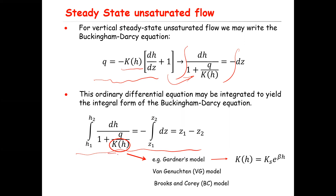In this equation, for K(h) you can use several parametric models like the van Genuchten model or Brooks and Corey's model to describe the unsaturated hydraulic conductivity. Some parametric models allow you to obtain an analytical solution for this integral. One of them is Gardner's model, expressed as K(h) equals Ks times e to the power of beta·h, where Ks is saturated hydraulic conductivity, h is the matric potential, and beta is a fitting parameter related to soil properties.